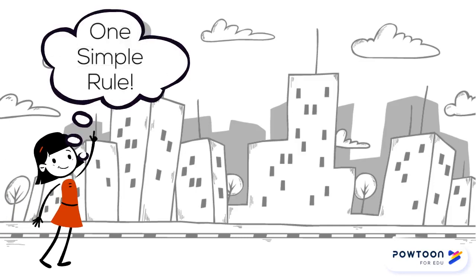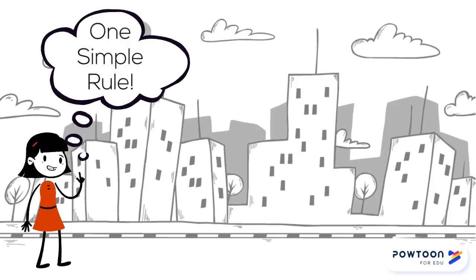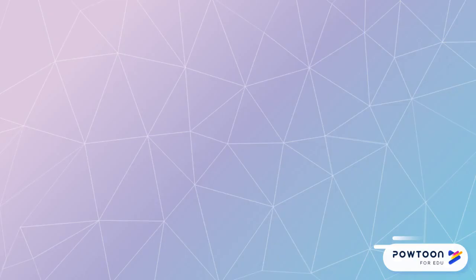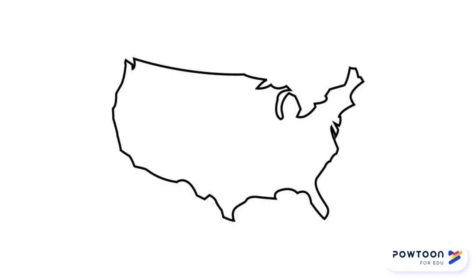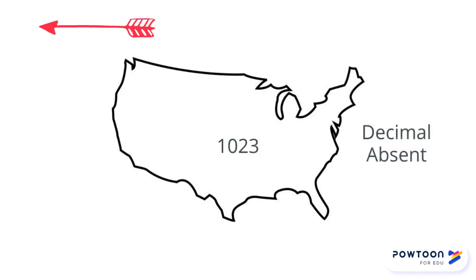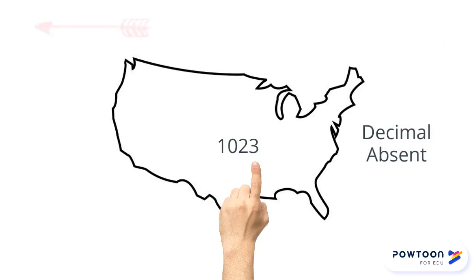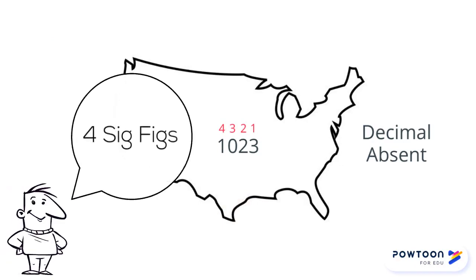Now that you know where to start and which direction to go, you have to memorize one simple rule: start counting at the first non-zero number and then count all of the numbers. That's it. Let's practice. 1,023 — decimal absent, start on the Atlantic, right side, go to the left. Since the first number is a non-zero, we will count it and all the rest for a total of four sig figs.